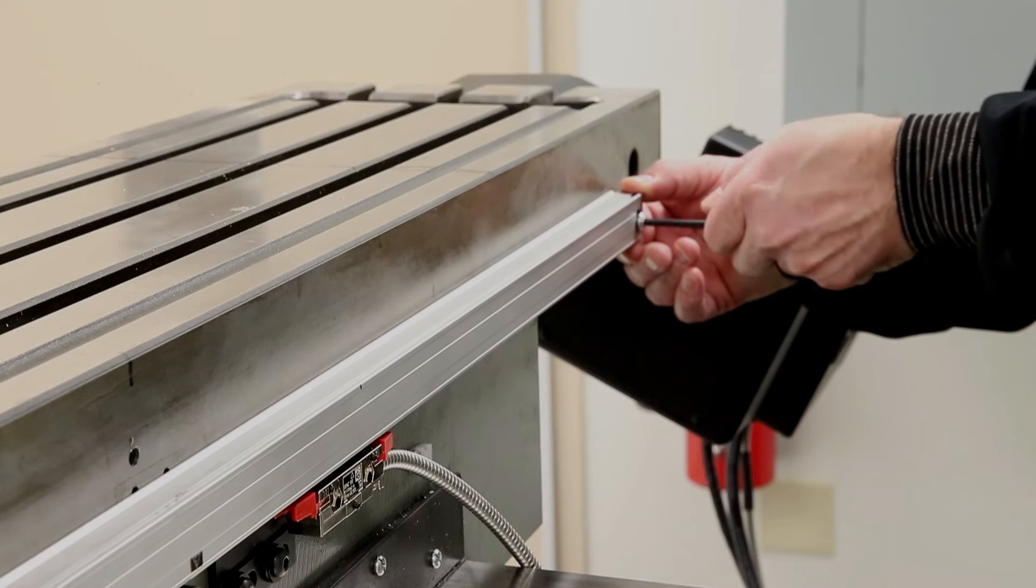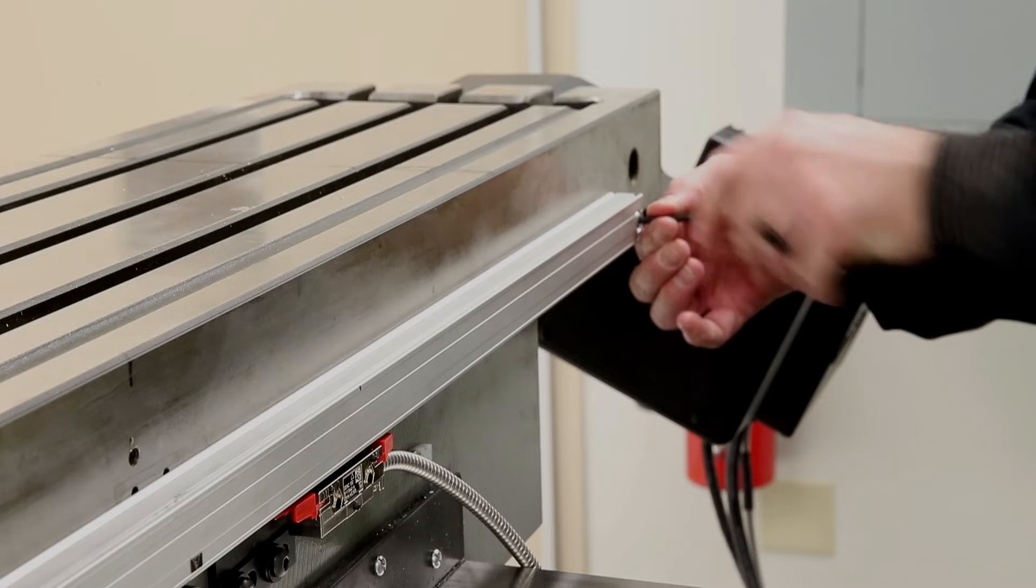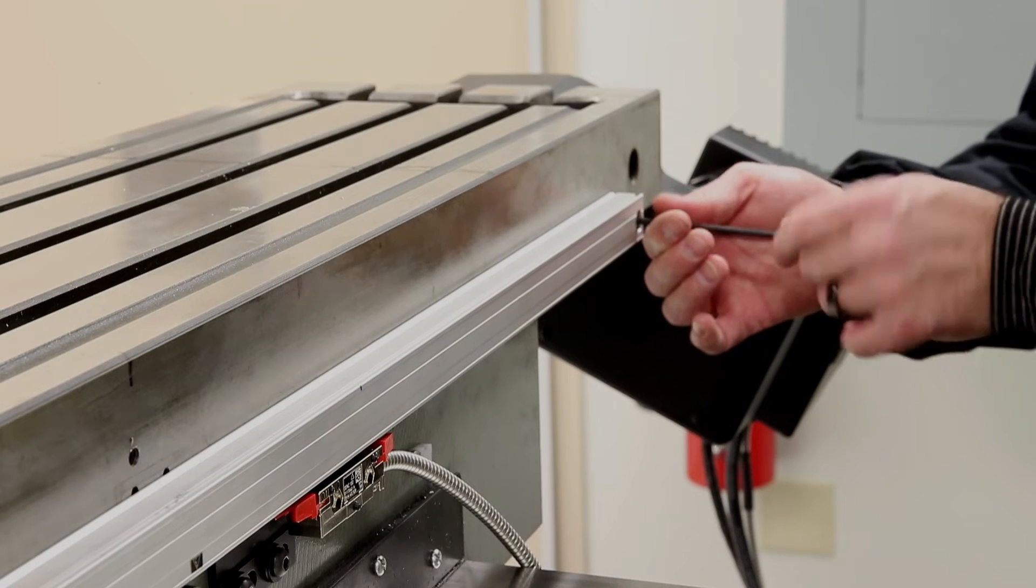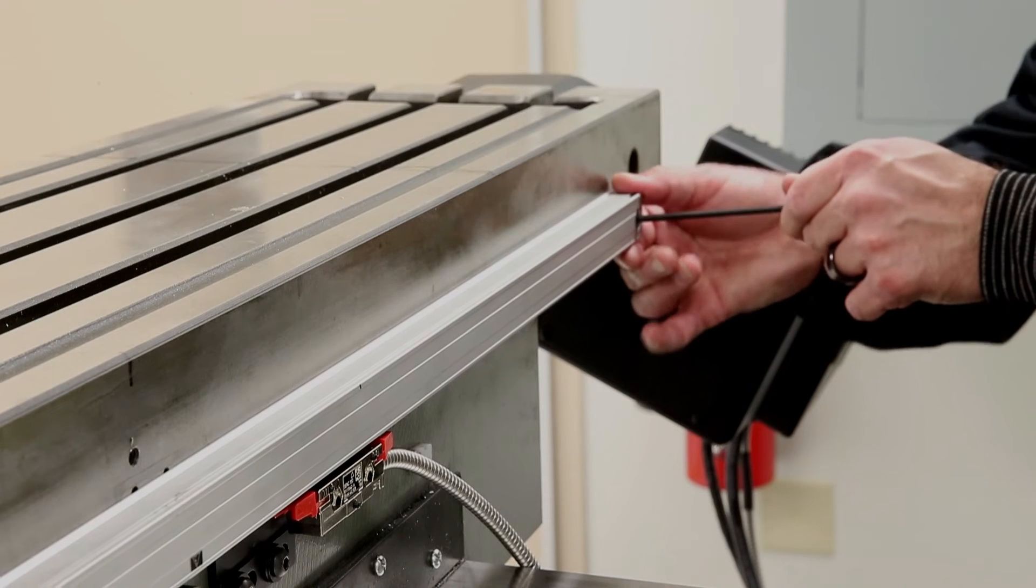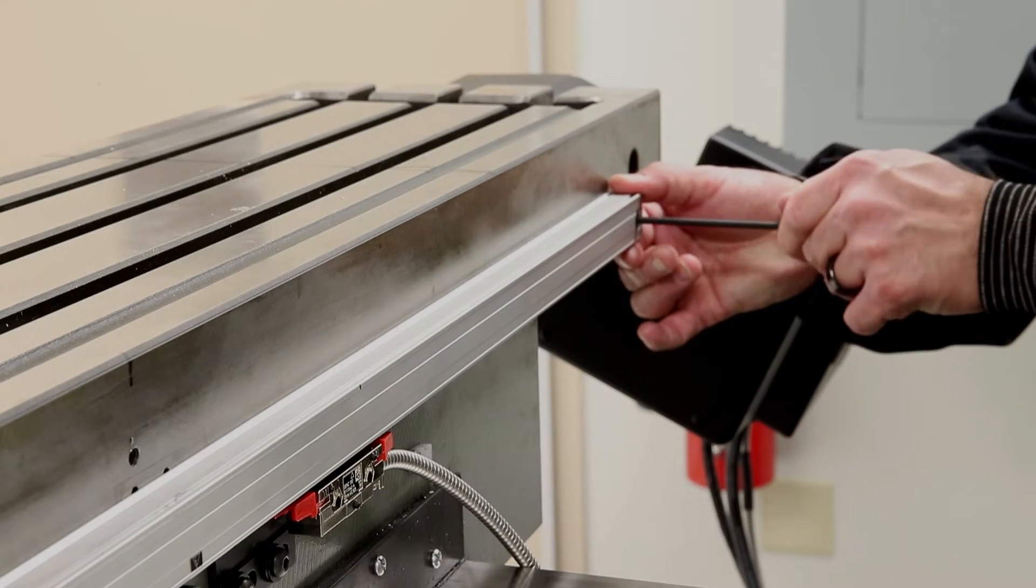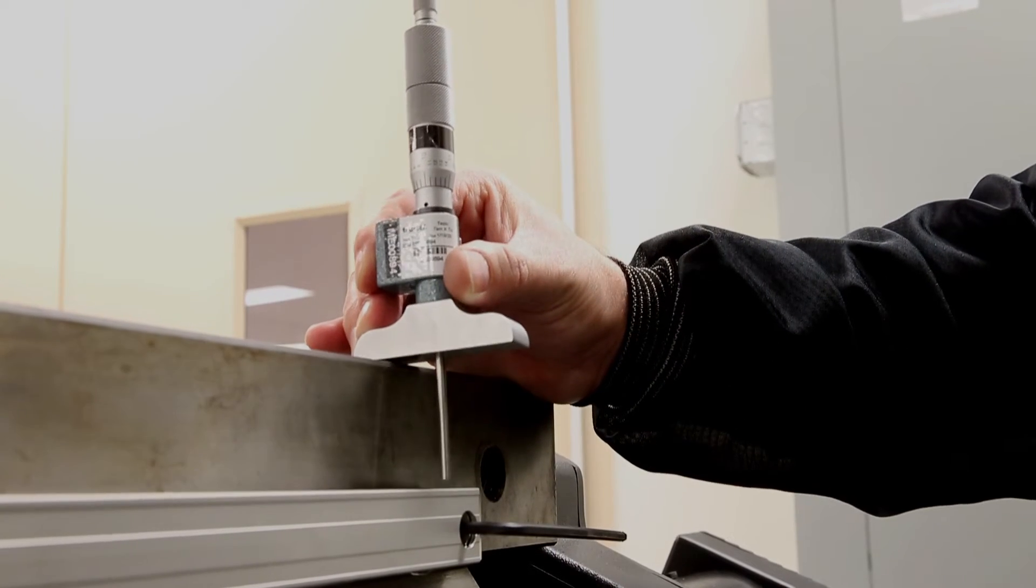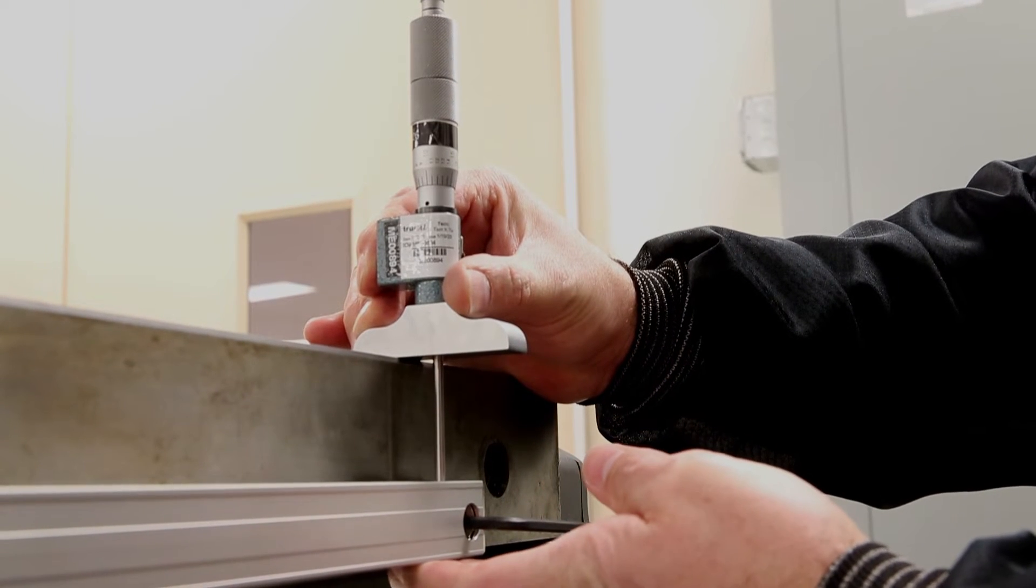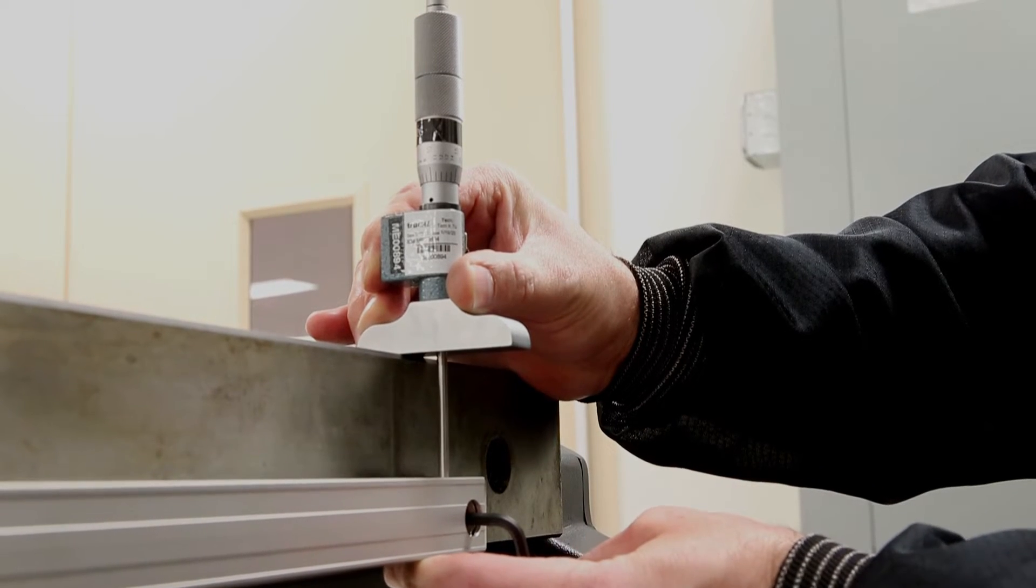We're going to move to the other side and do the same thing we just did. After you do this, you can take a dial indicator and measure from left to right or right to left to make sure it is within our mounting tolerances per our mounting instructions. Go ahead and tighten down the bolt.